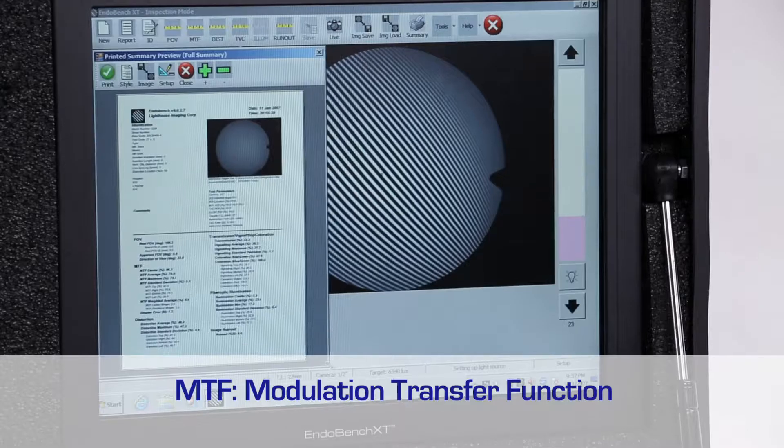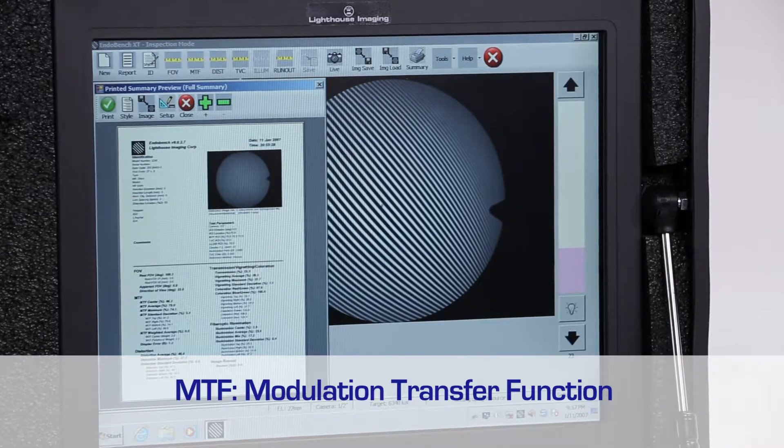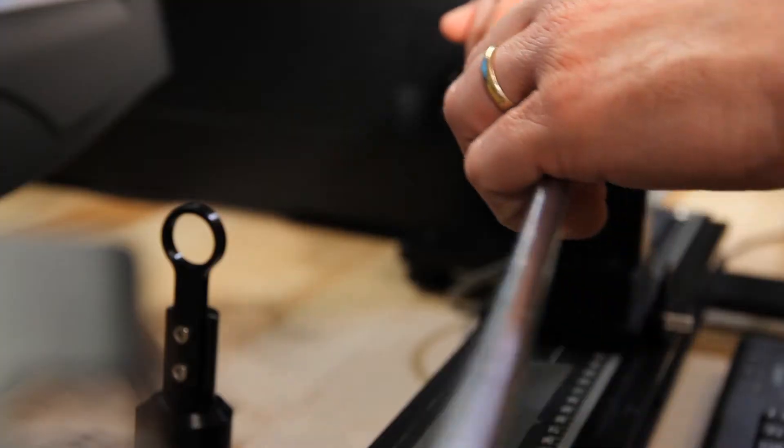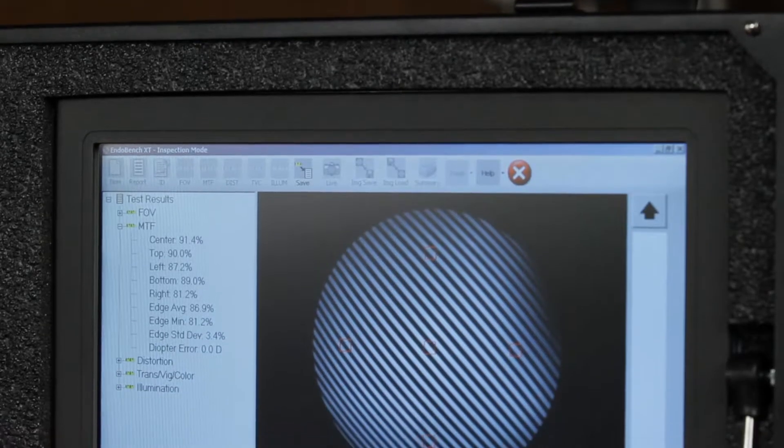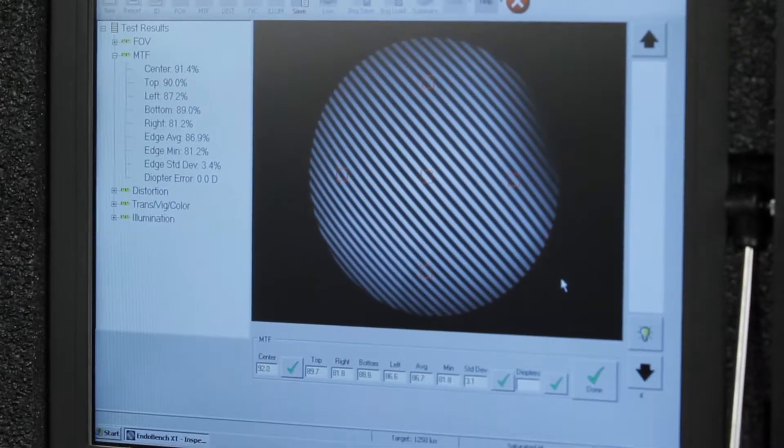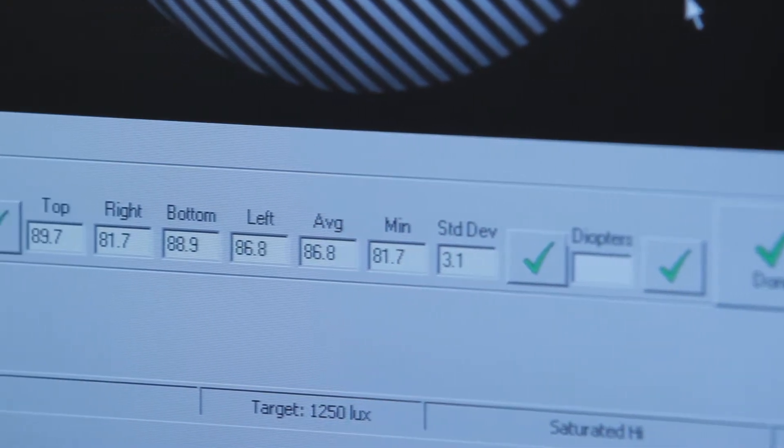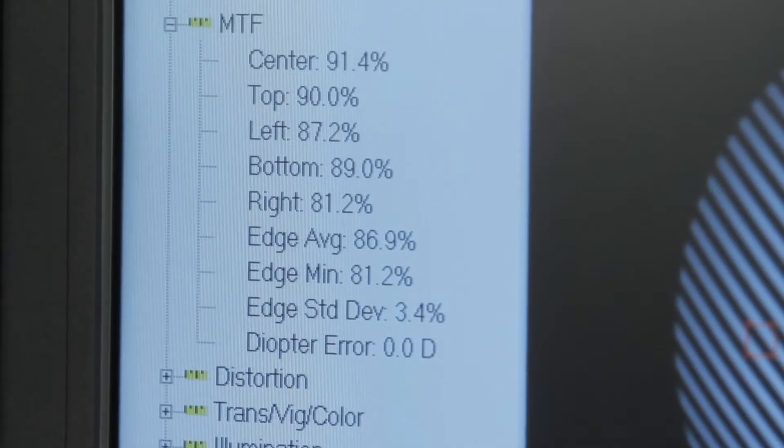MTF stands for modulation transfer function and it's really the heart of the EndoBench system. It's what allows you to quantify the image sharpness, which in the past has been the most subjective measurement and it's the most critical indicator of an endoscope quality. We provide a special black and white striped target and the machine vision system grabs the data from that image, compares the light and the dark regions, calculates the contrast, and comes up with the modulation transfer function.